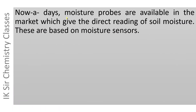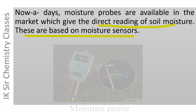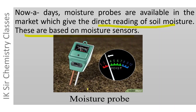Moisture probes are now available in the market which give a direct reading of soil moisture. These are based on moisture sensors. The probe has two rods with moisture sensors that are dipped into the soil to a certain depth, and the monitor gives a direct reading of the water content of soil.